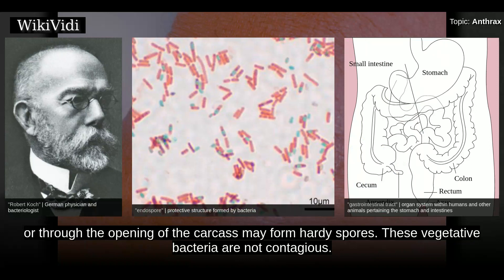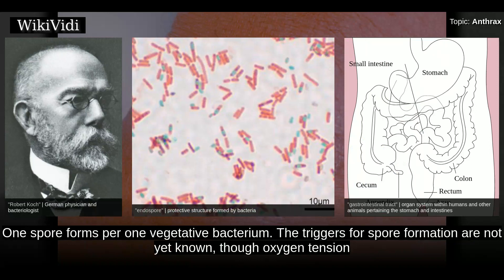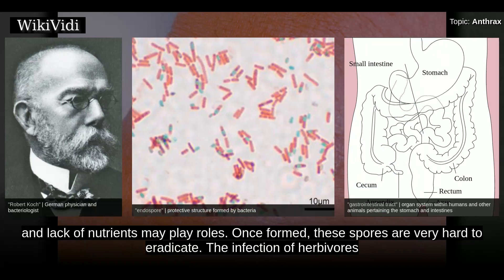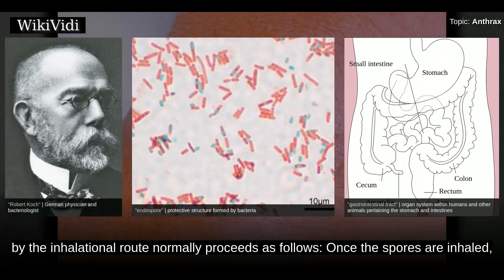However, anthrax vegetative bacteria that escape the body via oozing blood, or through the opening of the carcass, may form hardy spores. These vegetative bacteria are not contagious. One spore forms per one vegetative bacterium. The triggers for spore formation are not yet known, though oxygen tension and lack of nutrients may play roles. Once formed, these spores are very hard to eradicate. The infection of herbivores by the inhalational route normally proceeds as follows, once the spores are inhaled.